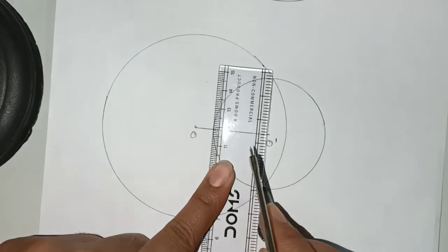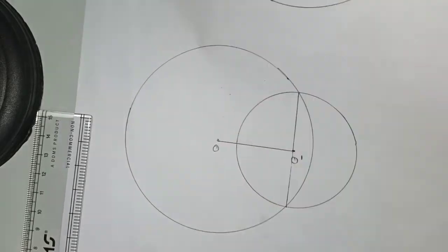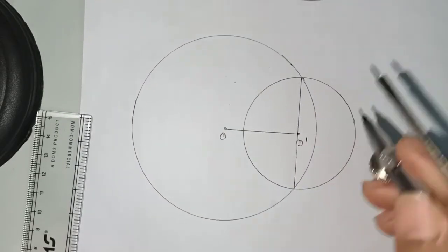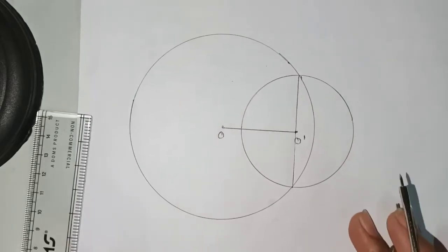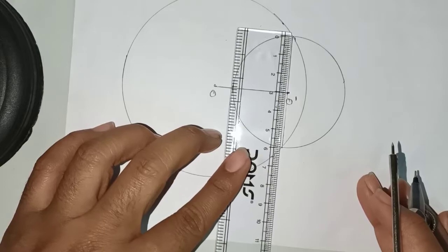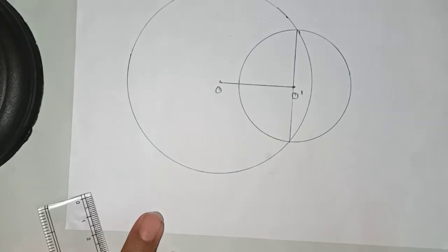Now we need to find the distance between these two. If it is not passing, also no problem. Just take the measurement of this one, keep your ruler here, measure it. You can see that exactly 6 centimeters you are getting. So from the construction you can find the length of this common chord.